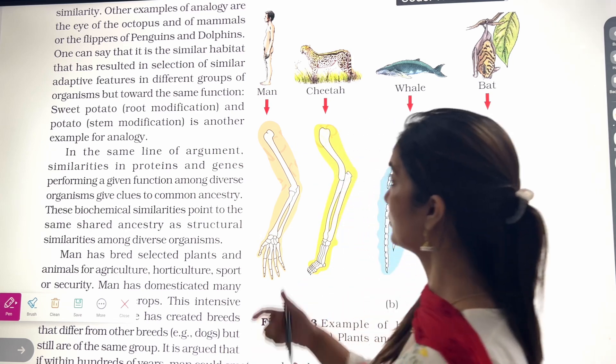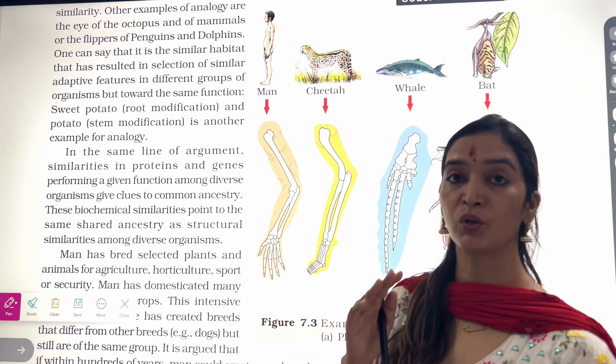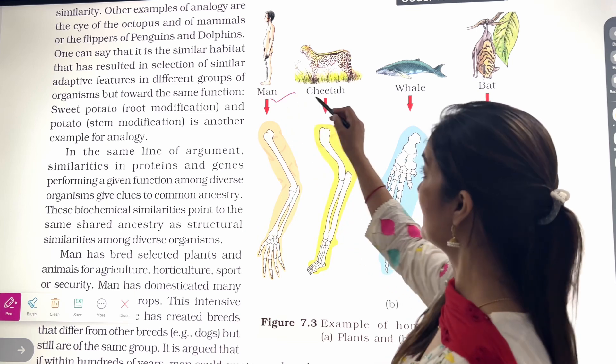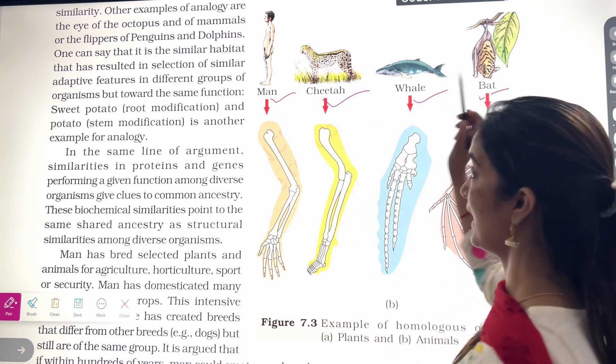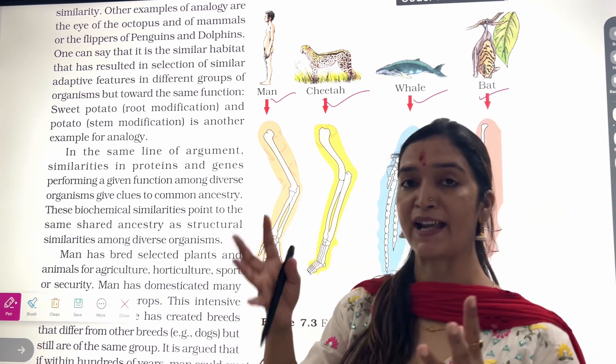Let's look at examples. Which organisms are called homologous organs? That is man, cheetah, whale and bat. Now you all know that man uses its hand for grasping.